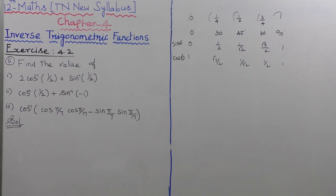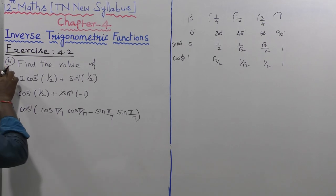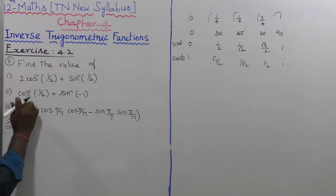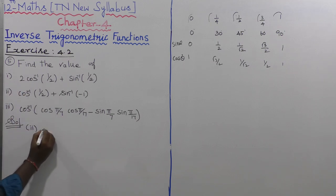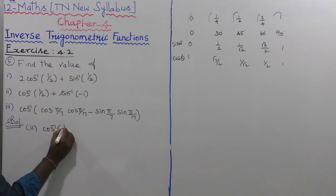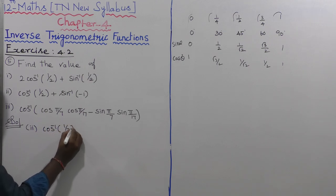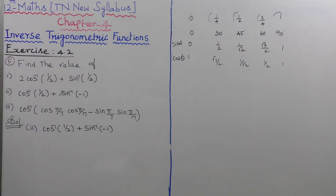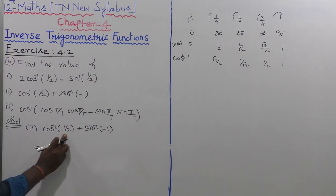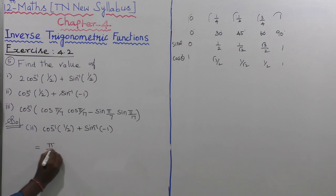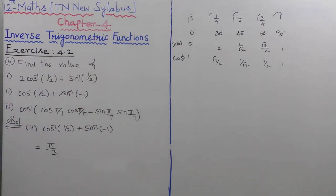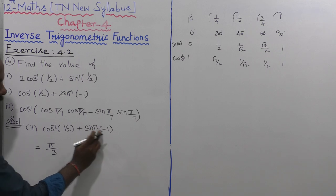The first sum and the second sum — the second subdivision. cos inverse of 1/2 plus sin inverse of minus 1. cos inverse of 1/2 is equal to π/3, so refer the table for the next one.